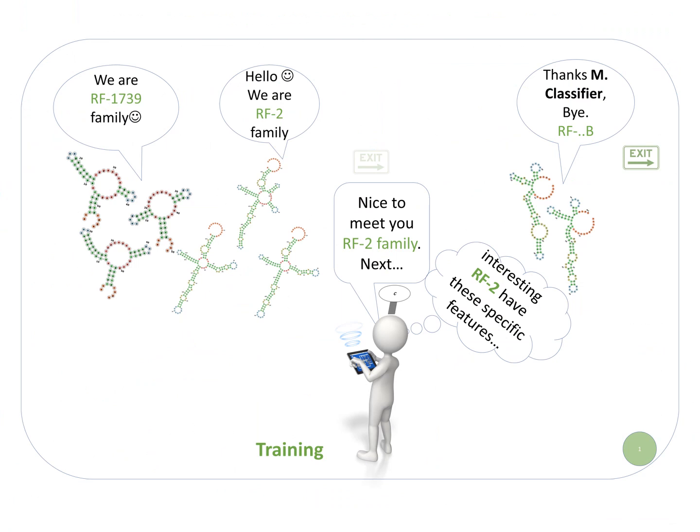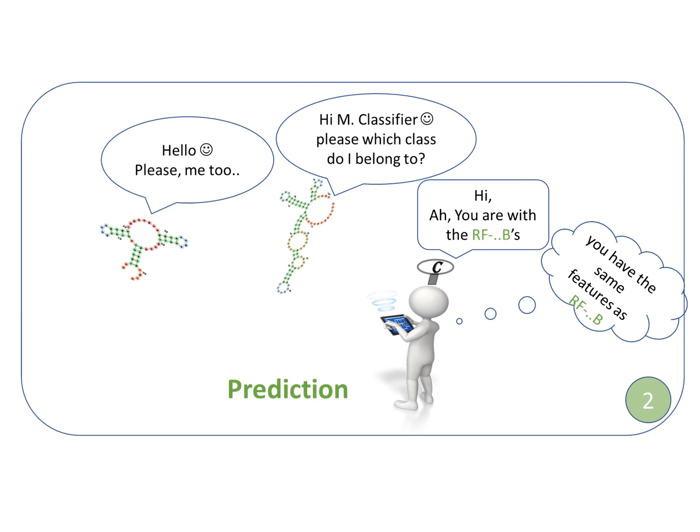The first step of the classification is the training part, where for each family we compute and learn their specific features. The second step is the prediction, where we predict the right class for new arrivals.